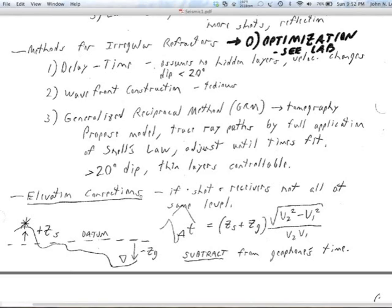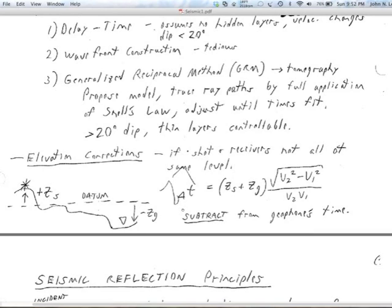One final thing about refraction is, if your shots and receivers are not all at the same level and you're not using optimization, and let's say you want to use these simple back of the envelope calculations, you can actually do a time correction, apply another kind of delta T. And that will actually even out your lines and make your data hopefully interpretable by these simple techniques.